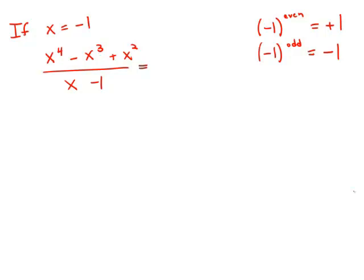So when we plug in x to the fourth, negative 1 to the fourth, that's going to be positive 1. Then minus negative 1 to the third, so that's going to be minus negative 1, plus negative 1 squared, that's positive 1.